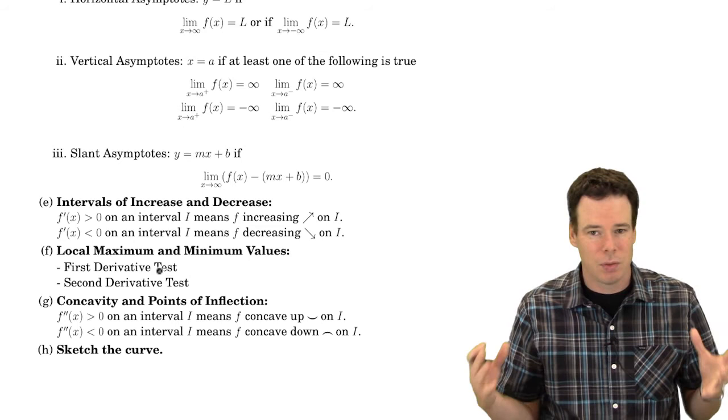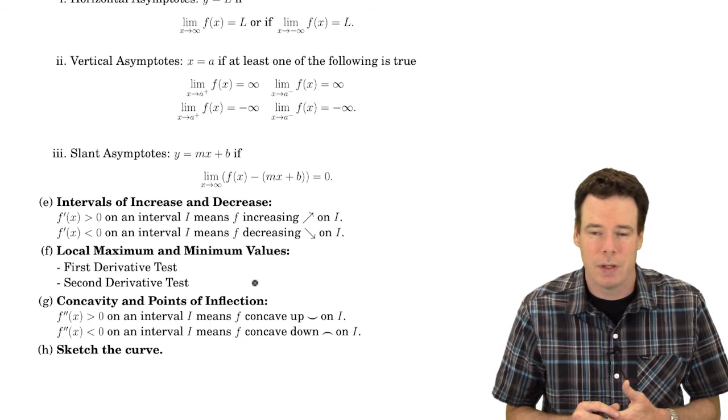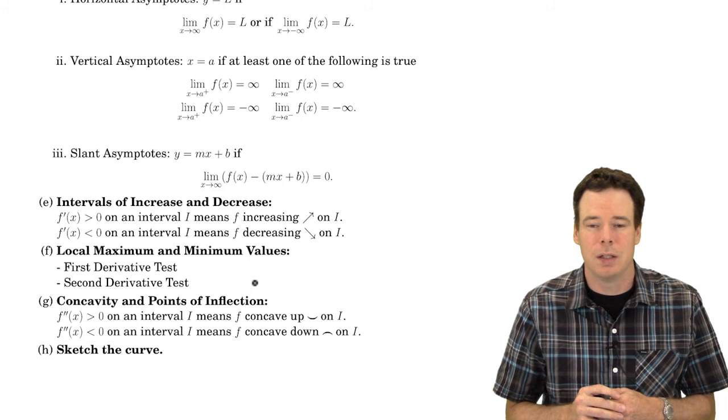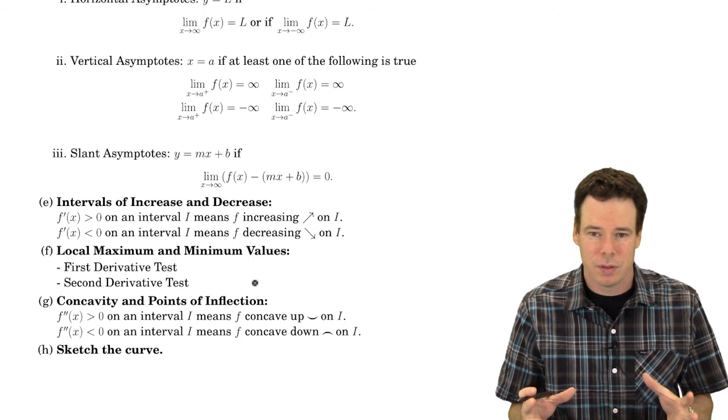Concavity, we can figure out where the functions concave up and concave down by looking at the sign of the second derivative. And if there's a change in sign of the second derivative then we can locate any points of inflection. Taking all that information we've then just worked out we can go ahead and sketch the curve. So let's go ahead and do an example.